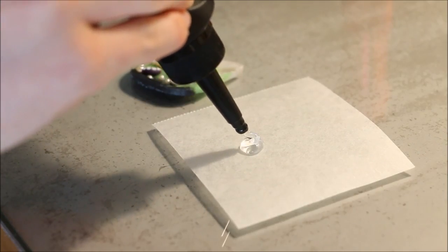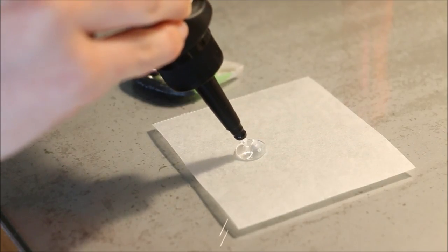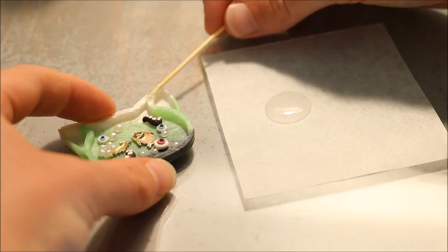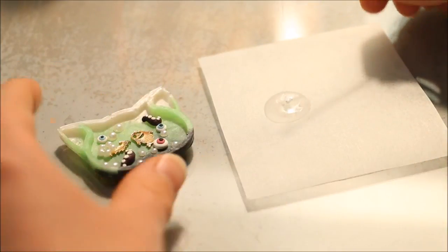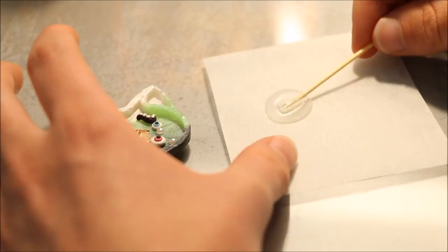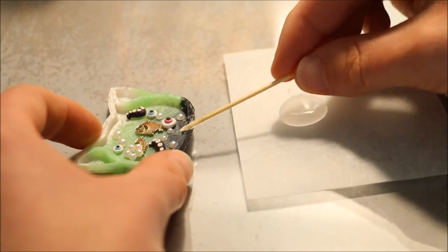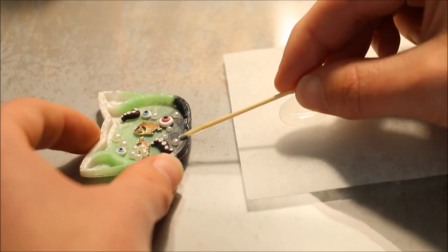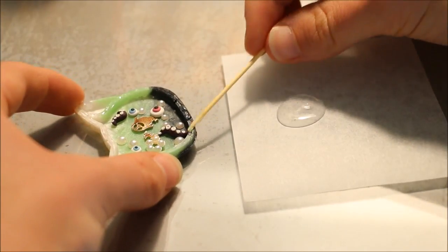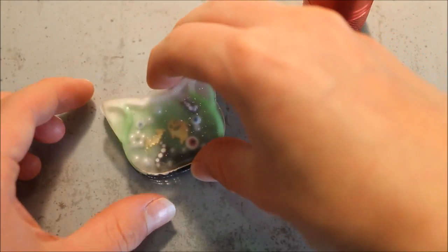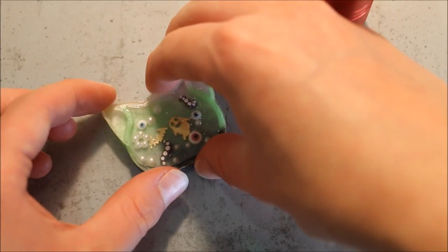I then took my UV resin again and used a toothpick to go along the edges and this will act as a glue. I decided to leave mine as a dry shaker charm but you can add liquid if you like. Then just place on the top piece and allow the resin to cure.